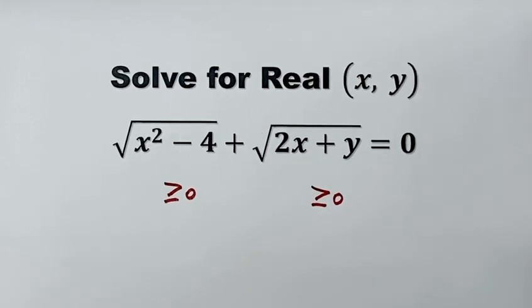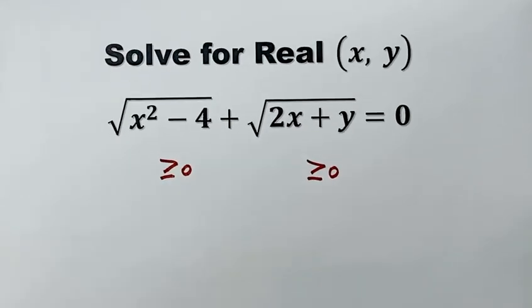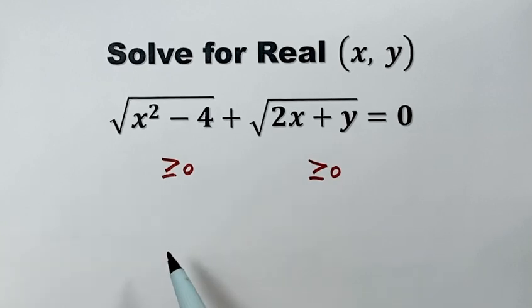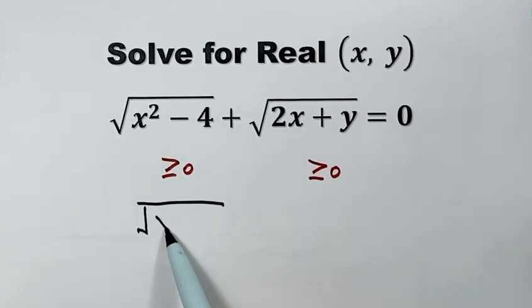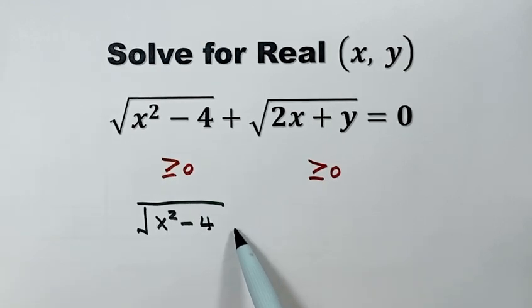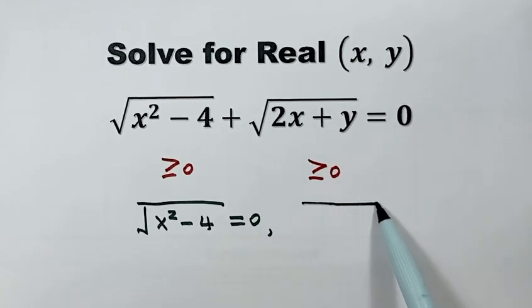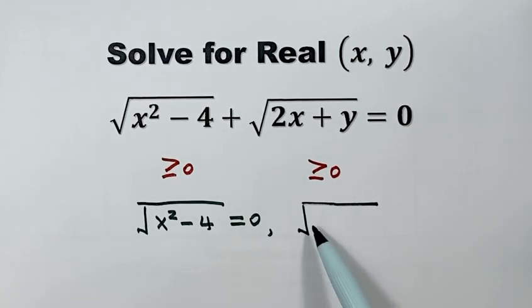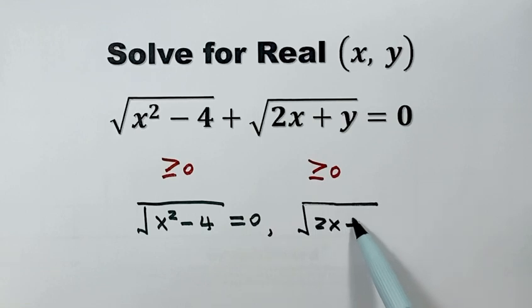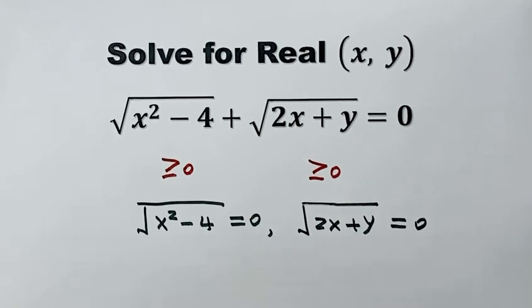So the first square root equals 0, which means x squared minus 4 equals 0. And the second square root equals 0, which means 2x plus y equals 0.